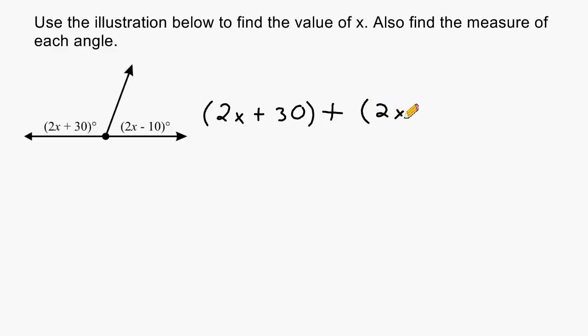And then all we have to do is figure out what the value of x is by isolating that variable. Now, right below I am going to write 2x plus 30 and because we have a plus sign, we can keep every term inside the next set of parentheses the same.